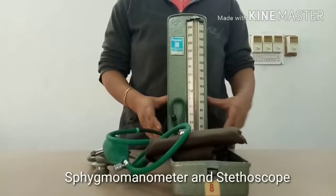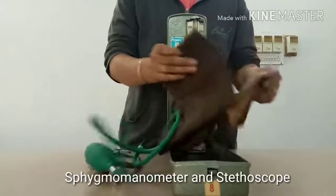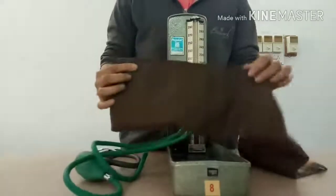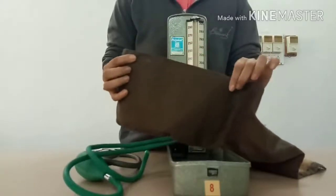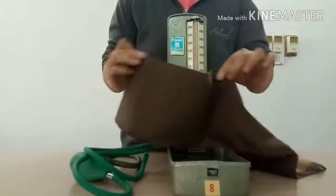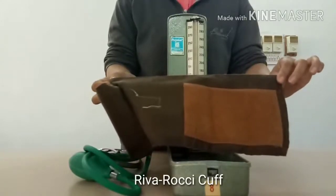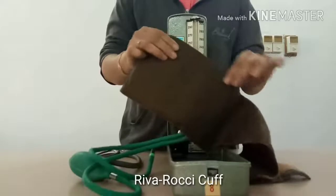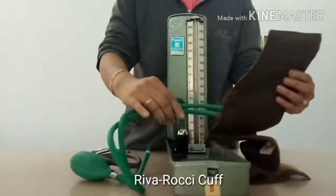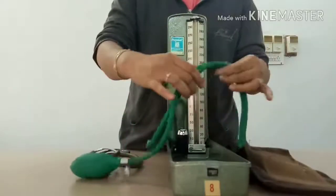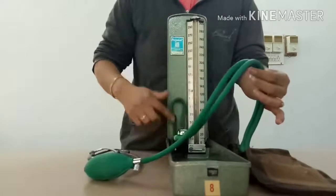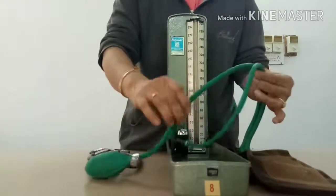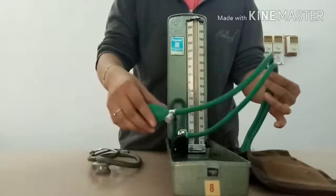The sphygmomanometer consists of an inflatable flat rubber bag covered by a non-distensible cloth envelope called the Riva-Rocci cuff. The cavity of the bag is connected by a long rubber tube to a manometer and by a short rubber tube to a rubber pump.